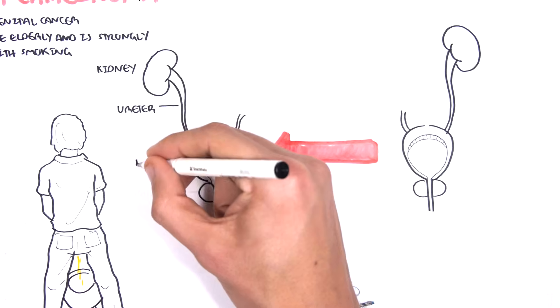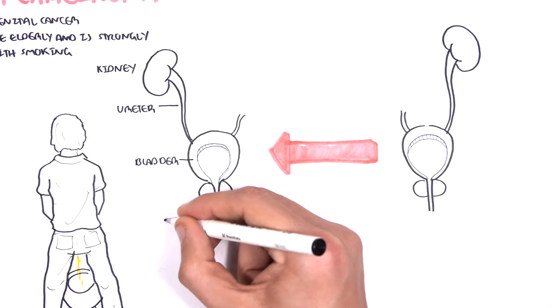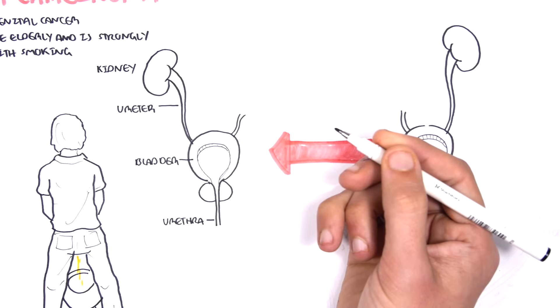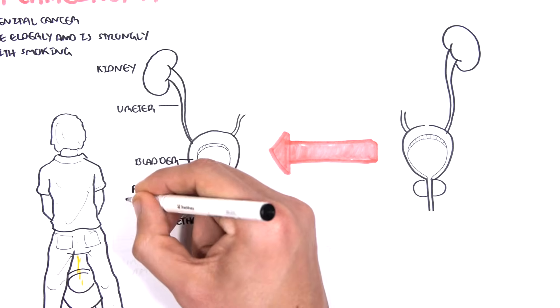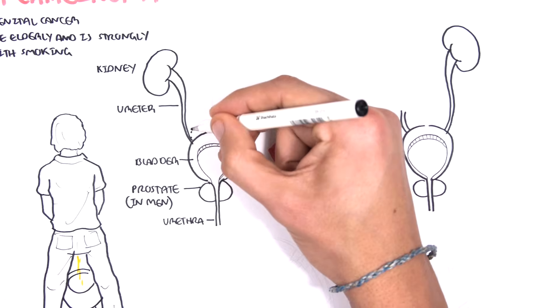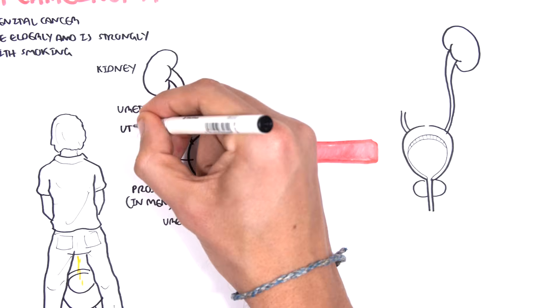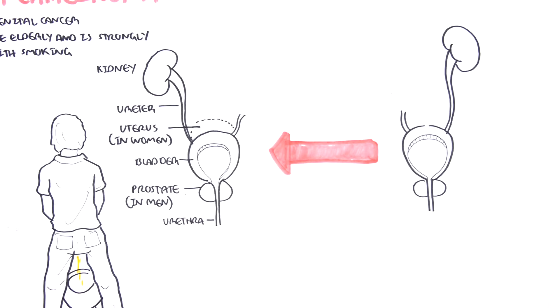which brings urine into the bladder where urine is stored. When the bladder is full, urine passes through the urethra and goes out. There is the prostate below the bladder in men. And in women, there is the uterus which is behind the urinary bladder.